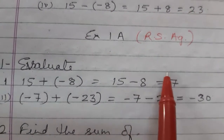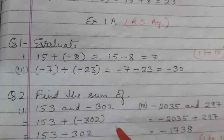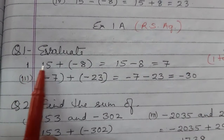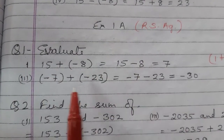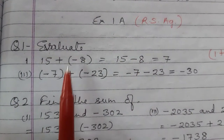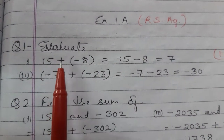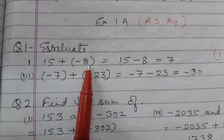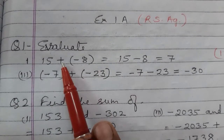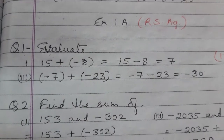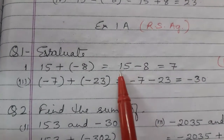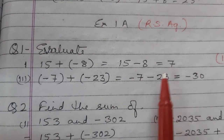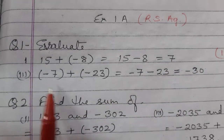Now we come to question answers. These questions are from your R.S. Agarwal book. Question number 1 of Exercise 1A: Evaluate. The first one is addition: 15 plus minus 8. Removing the bracket you get minus 8, so 15 minus 8 equals 7. That is the third question done.